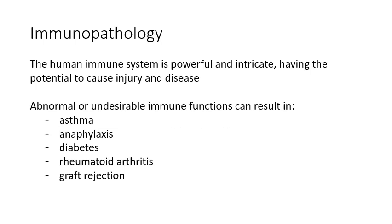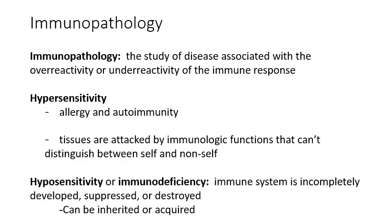Immunopathology is when your immune system either overreacts or underreacts. The immune system is incredibly complex, so there are lots of opportunities for things to go awry. Some signs of abnormal immune function are things like asthma, anaphylaxis, diabetes, rheumatoid arthritis, or any kind of graft rejection. Immunopathologies can be categorized as either hypersensitivities, where the immune system is overreacting, or hyposensitivities, where the immune system is underreacting.